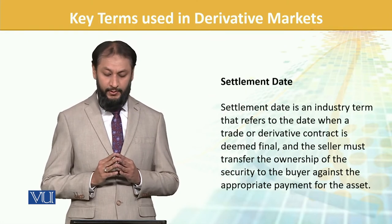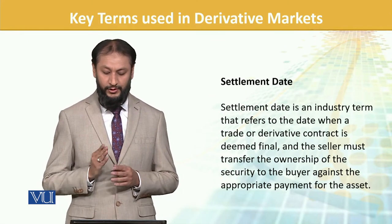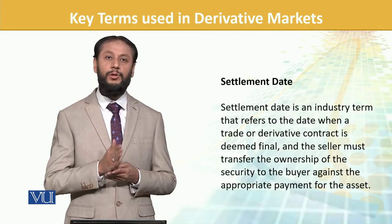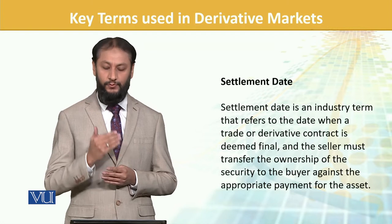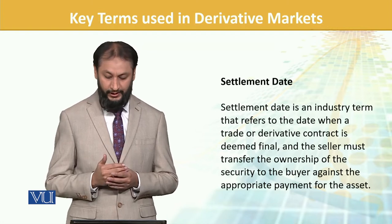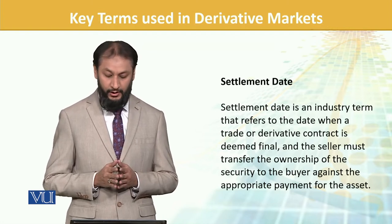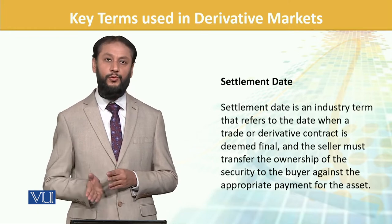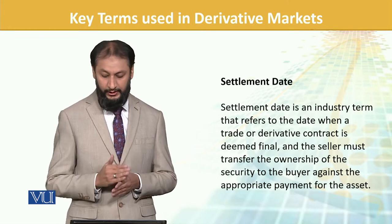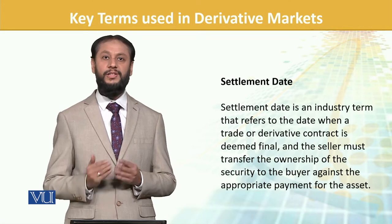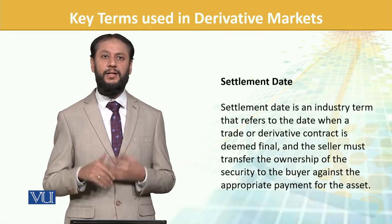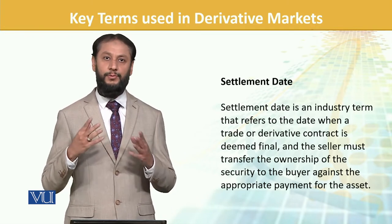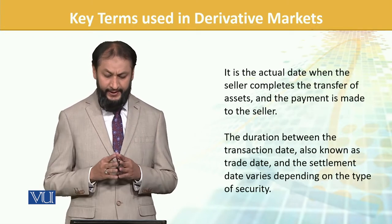Settlement date is an industry term that refers to the date when a trade or derivative is deemed final — concluded and closed — and the seller must transfer ownership of the asset to the buyer, physically transfer it along with payments. That is referred to as settlement, a general word which we frequently use in different contexts and examples.